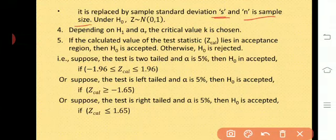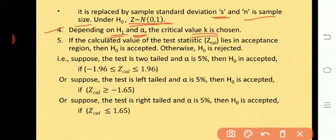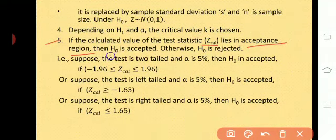Under H0, Z follows Normal(0,1), the standard normal distribution, which you are studying in PUC second year, fifth unit. Step 4: depending on H1 and alpha, the level of significance, the critical value K is chosen from the statistical table. Step 5: if the calculated value of the test statistic Z calculated lies in the acceptance region, then H0 is accepted. Otherwise, H0 is rejected.